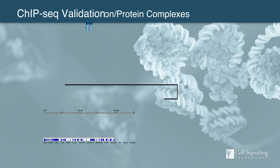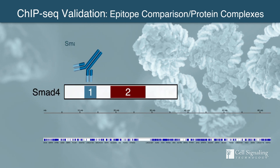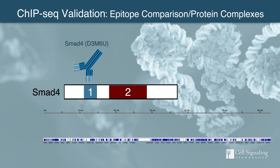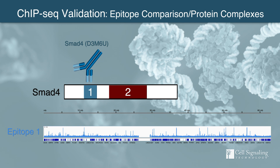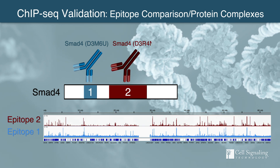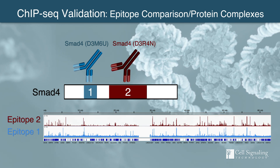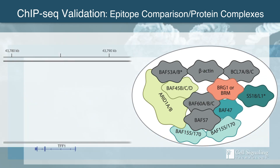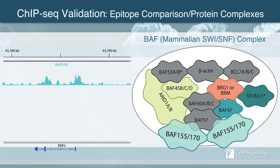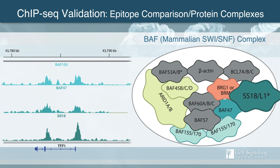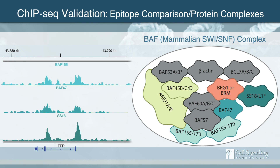Specificity of an antibody can be further confirmed by comparing its enrichment across the genome to that of antibodies directed against distinct target protein epitopes or against different subunits of a multi-protein complex, to give you more confidence your results are accurate.